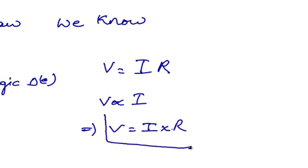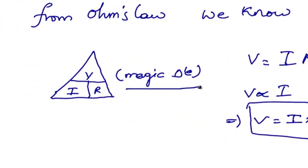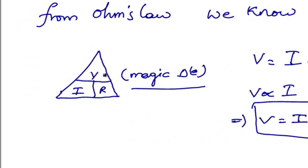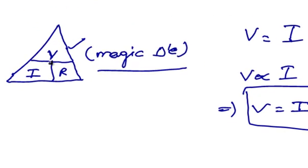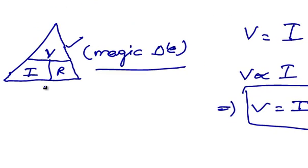The same thing can be represented in a magic triangle like this. In this triangle, V is the potential difference across the conductor, I is the current flowing across the conductor, and R is the resistance offered by the conductor.